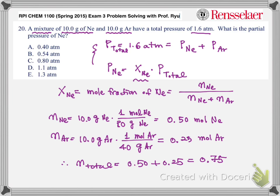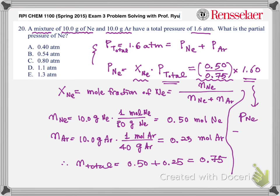So in this case, the partial pressure is 0.50 divided by 0.75 total number of moles, and multiply total pressure, which is 1.60. That's the mole fraction and this is the total pressure. And if you do this, you will get partial pressure of neon is 1.1 atm atmosphere. So the answer for this is D.